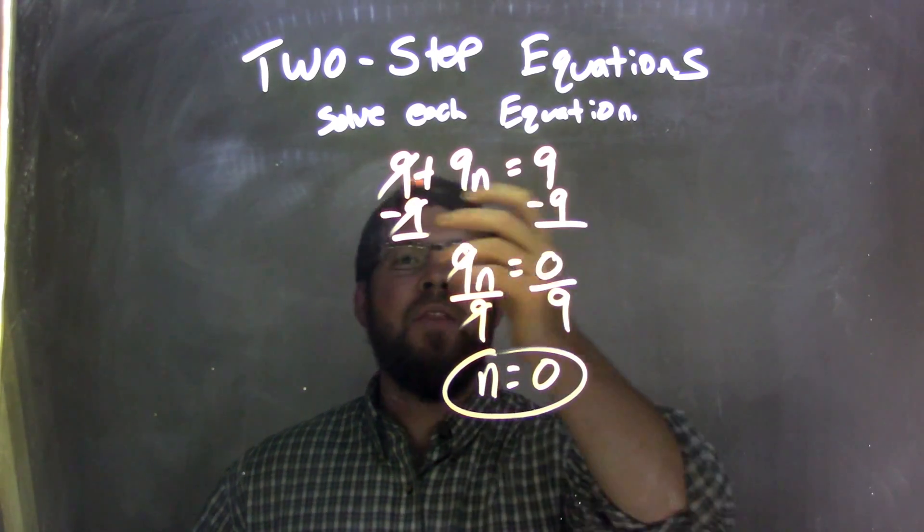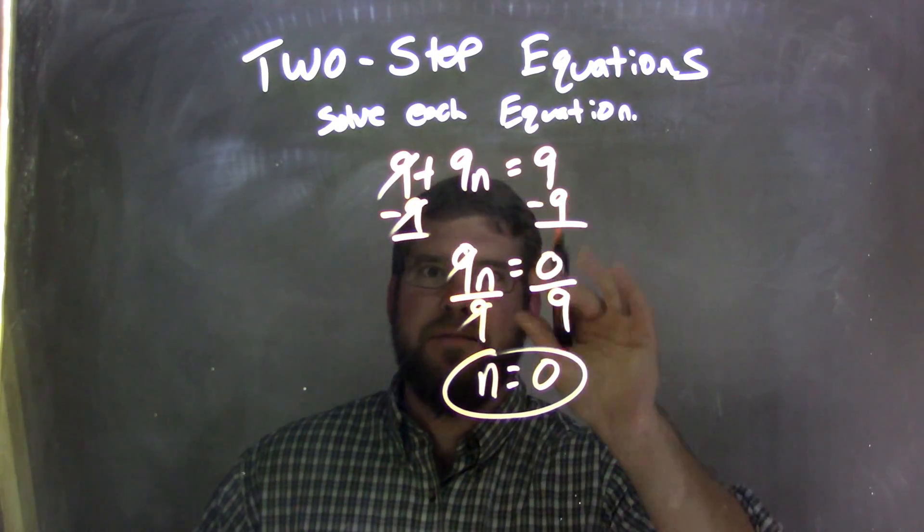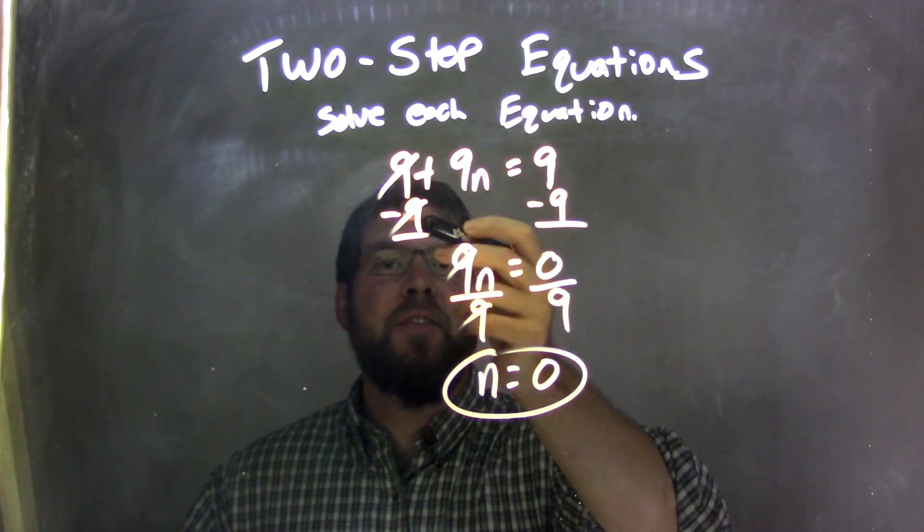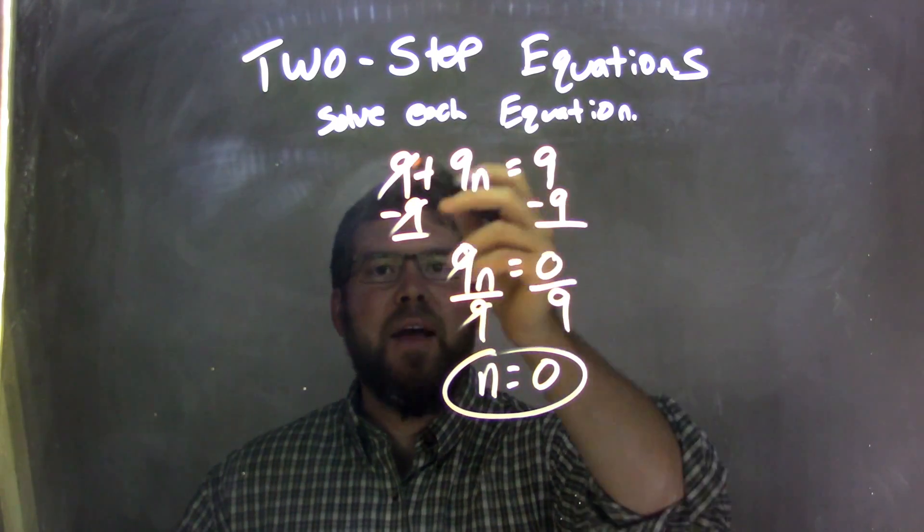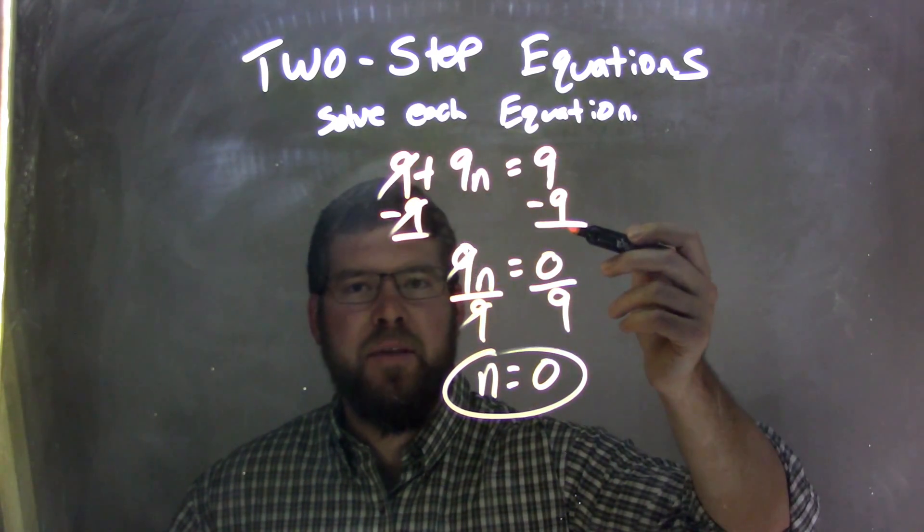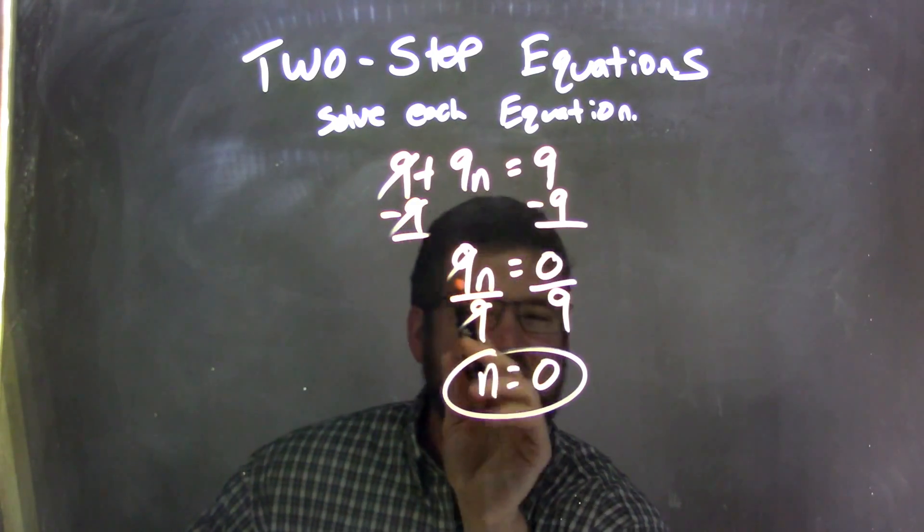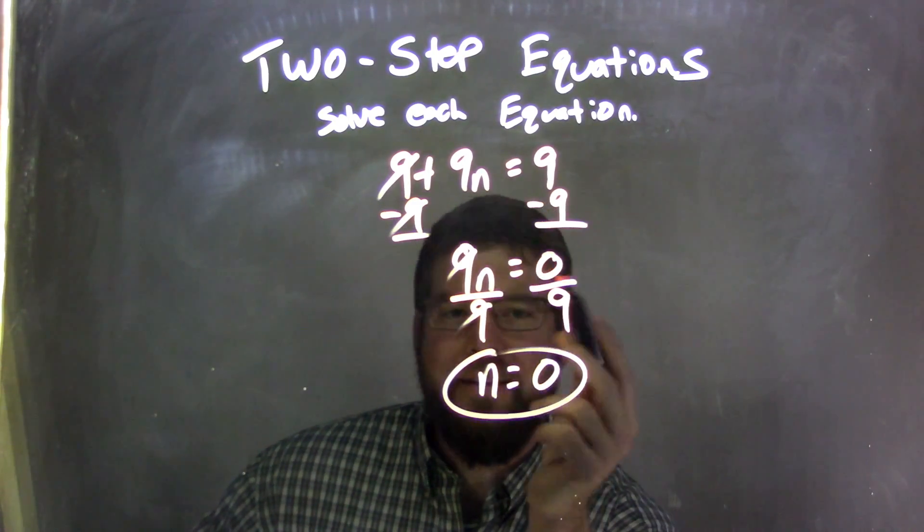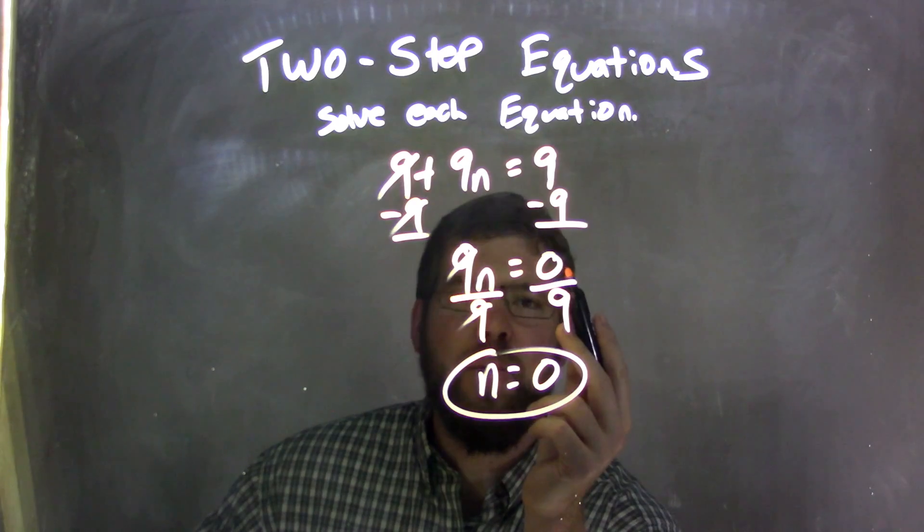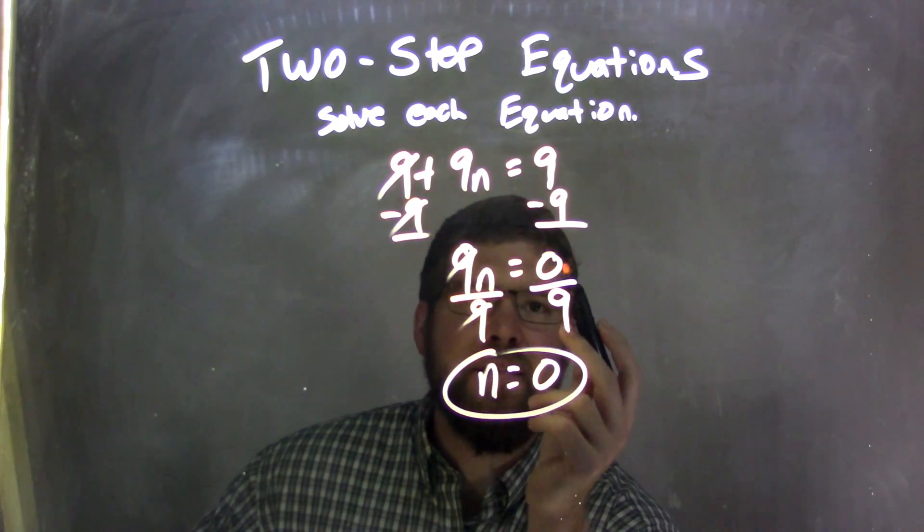So, let's recap. We start with 9 plus 9n equals 9. A lot of 9s. I subtracted this 9 first from both sides. That cancels out here, but also cancels out on this side. Don't write a 0 here. Don't need it. It's like imaginary plus 0. But this one's important because that's the only value on the right side of the equal sign. So, I have 9 minus 9 equal to 0.